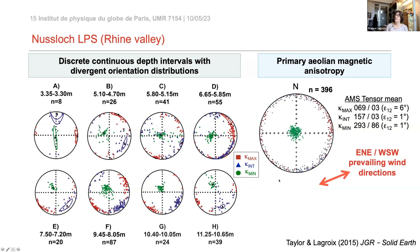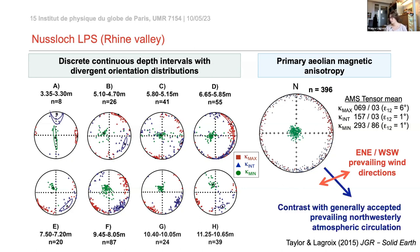Focusing on the primary fabric results, the tensor mean of this population gives a Kmax orientation of 70 degrees — east-northeast. This suggests that for the stage 2 glacial deposit the prevailing wind direction was east-northeast, which again contrasts with the generally accepted northwesterly wind circulation.